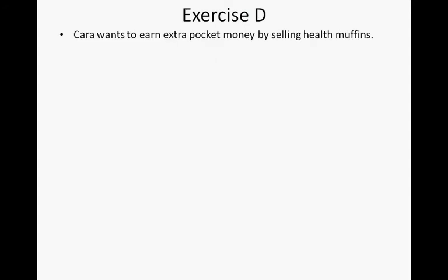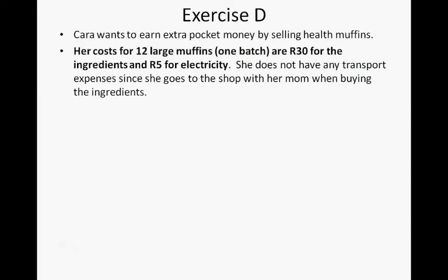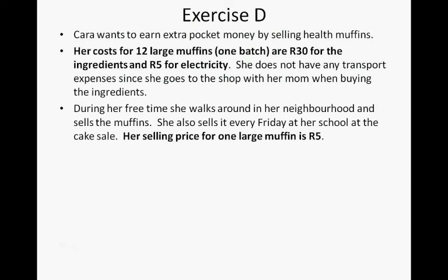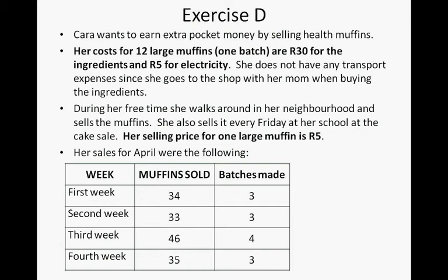Kara wants to earn pocket money by selling health muffins. Her costs for 12 large muffins — one batch — are 30 Rand for the ingredients and 5 Rand for the electricity. She doesn't have any transport expenses since she goes to the shop with her mum. She sells muffins in her neighborhood and every Friday at school at the cake sale. Her selling price for one large muffin is 5 Rand. Her sales for April were 34, 33, 46 and 35 muffins.